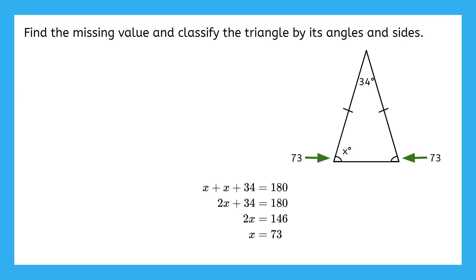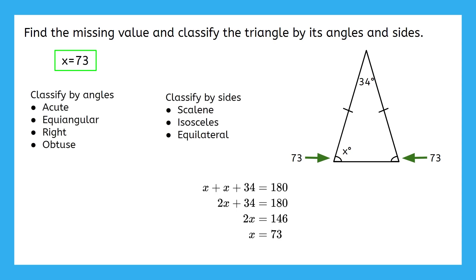We still need to classify the triangle based on its angles and based on its sides. Here are your options for each classification. What answer would you choose from each of these? All of the angles are less than 90 degrees, so this is acute, and two sides are congruent, making it isosceles. This gives us the rest of our answer.